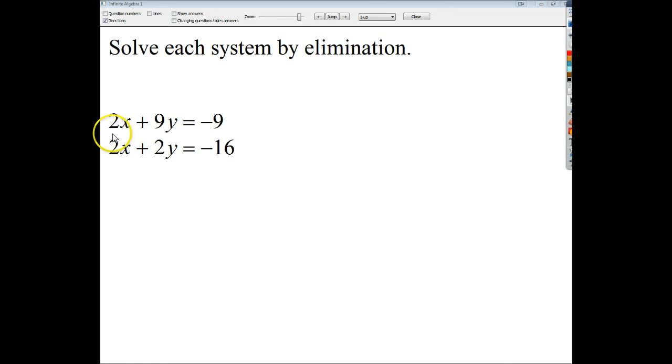So I'm going to multiply one of these by negative 1. And you could even do the top if you wanted to. So if I wanted to do the top by negative 1, I'd end up with negative 2x minus 9y equals 9. And then on the bottom, I'd leave it the same. Now I see that these can cancel out and I can just work it out from there.